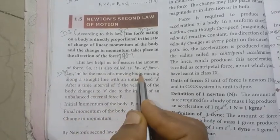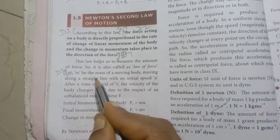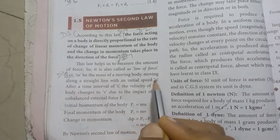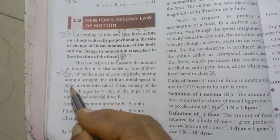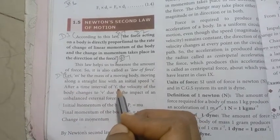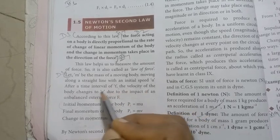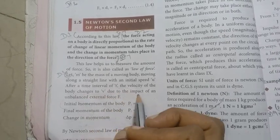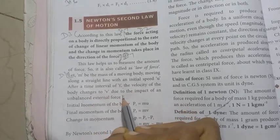Of a moving body, moving along a straight line with an initial speed u. In interval of time t, the velocity of the body changes to v, due to the impact of an unbalanced external force f.